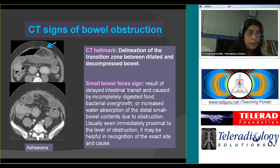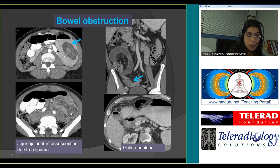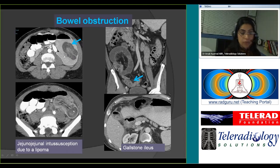In this case there is small bowel obstruction with a small bowel feces sign as a result of adhesion — you can see the abdominal wall scar. Another cause of intestinal obstruction is intussusception: this patient had jejuno-jejunal intussusception — notice the bowel-within-bowel appearance. In small bowel intussusception in adult patients, look for a lead point. This patient had a lipoma acting as a lead point.